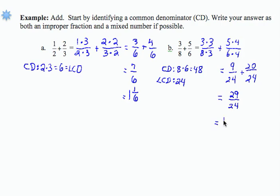My mixed number: 24 into 29 goes one time, leaving a remainder of 5 over the denominator of 24.